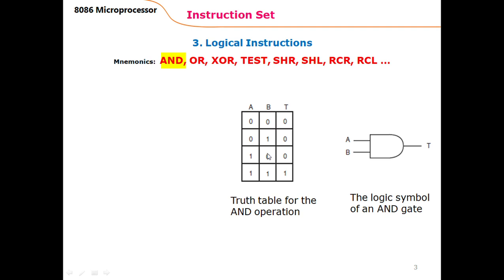The AND operation has two operands, A and B, and their output T. Each variable can have a value of zero or one, so the total possibilities in the binary system are four. Both input operands can be zero, one can be zero and the other one, the first one can be one and the other zero, and both can be one. T is the output of the AND operation.